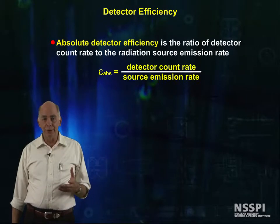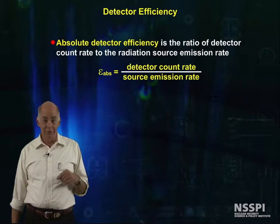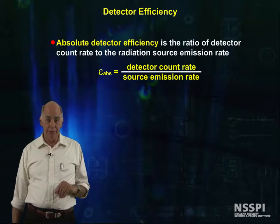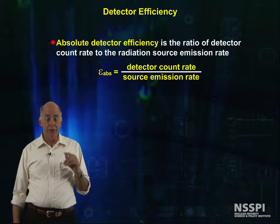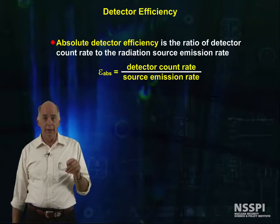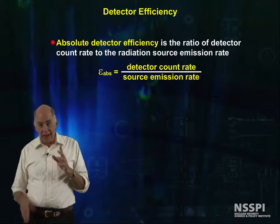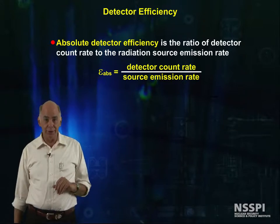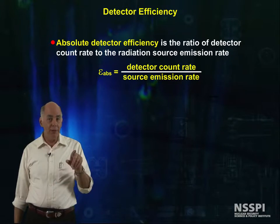When working with radiation efficiencies, the most useful is the absolute efficiency. I can take the detector count rate, divide by the absolute efficiency, and after making some other corrections, have the radiation emission rate.